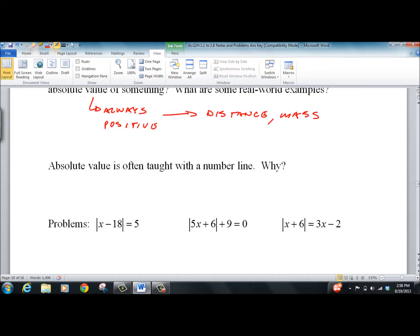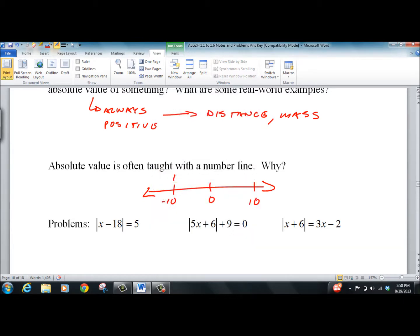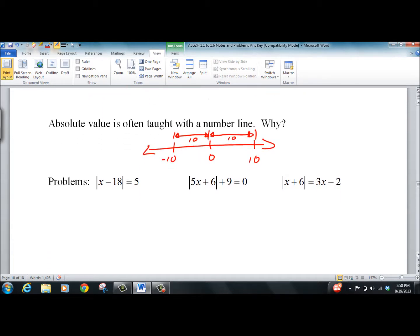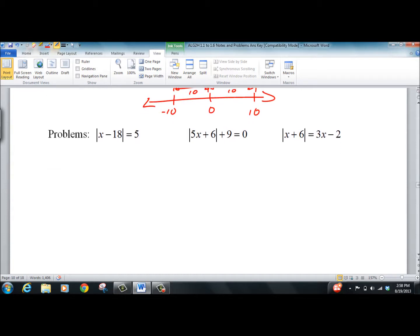And this is often taught with a number line. I will draw the world's worst number lines because it's a simple concept. What's the distance from negative 10 to 0? It's 10. What's the difference from 0 to 10? It's 10 again. So it's a distance thing on a number line. The tricky part of solving it. I'm going to show you a technique. A lot of people don't want to do it. It'll save you some hassle later. So I'd recommend it.